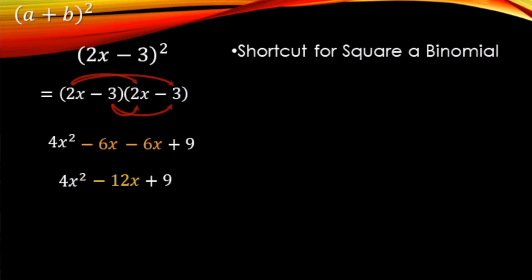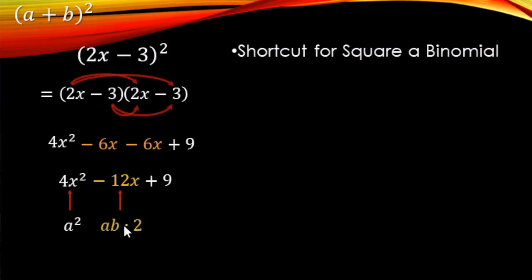And then the constant term is 9. We're looking for the shortcut, so let's see where these numbers came from. The 4x squared came from 2x times itself — the a term squared. The middle term came from the two minus 6x terms, which came from 2 times 3 on both — that's 2x times 3 multiplied, making negative 6, and then doubled. So we multiply the two numbers together and then double it. And the 9 came from negative 3 squared — that last number multiplied by itself.